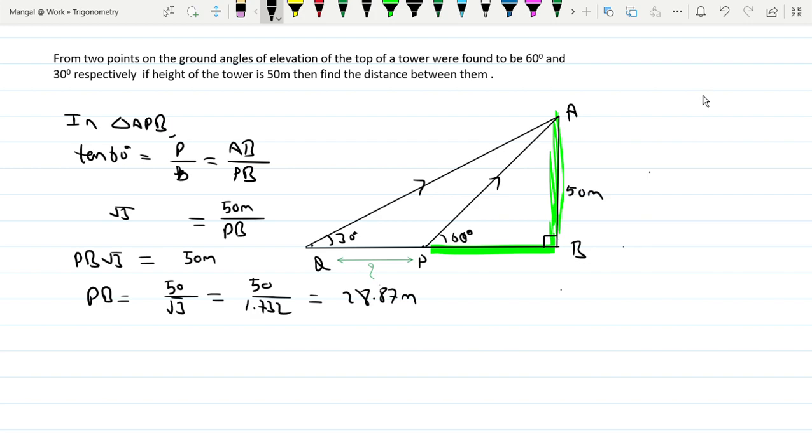Now for triangle AQB. In triangle AQB, AB is the perpendicular and BQ is the base. So in triangle AQB, tan 30 degrees equals perpendicular divided by base.